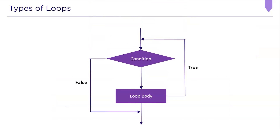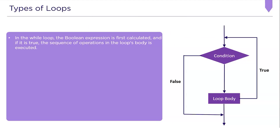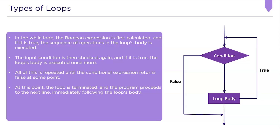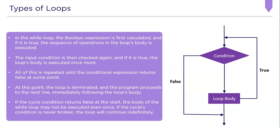The while loop flow diagram is shown below. In the while loop, the boolean expression is first calculated, and if it's true, the sequence of operations in the loop body are executed. The condition is then checked again, and if it's true, the loop body is executed once more. This is repeated until the conditional expression returns false, at which point the loop is terminated and the program proceeds to the next line. If the cycle condition returns false at start, the body may not execute even once. If the condition is never broken, the loop will continue indefinitely.